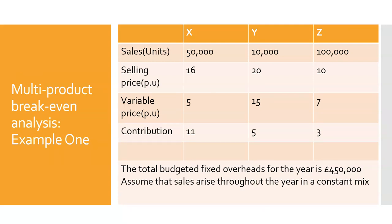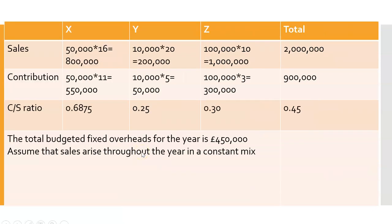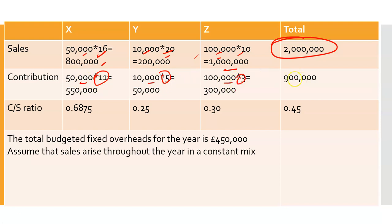Here's an example where you're selling 50,000 units, 10,000 units, and 100,000 units. Here's the selling price and variable cost for each — we find the contribution. We know we have to cover our fixed overheads of £450,000, and we know this is a constant sales mix. So first, find the total revenue of all units. Find your contribution, which is contribution per unit times the number of units for each product, then add it all together. The individual C over S ratios differ, but the weighted average C over S ratio — based on the number of units — is 0.45.